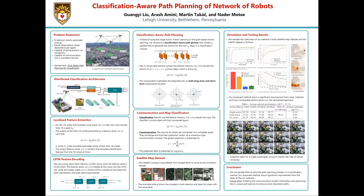In order to tackle this problem, we use LSTM cells. The LSTM cells take the feature vector X_iT as input and build an interconnection between all the collected feature vectors. The output of the LSTM cells is the hidden states, named M_iT. These feature history vectors will be used for both classification and path planning purposes.